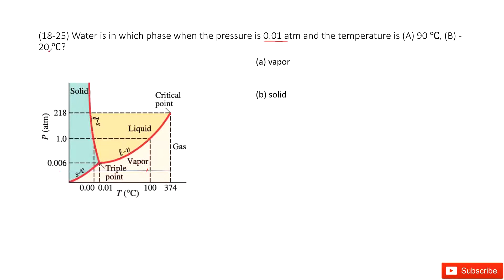B is negative 20 degrees. So you can see this is 0 and maybe there is negative 20. Negative 20 is there, so it becomes a solid. Thank you.